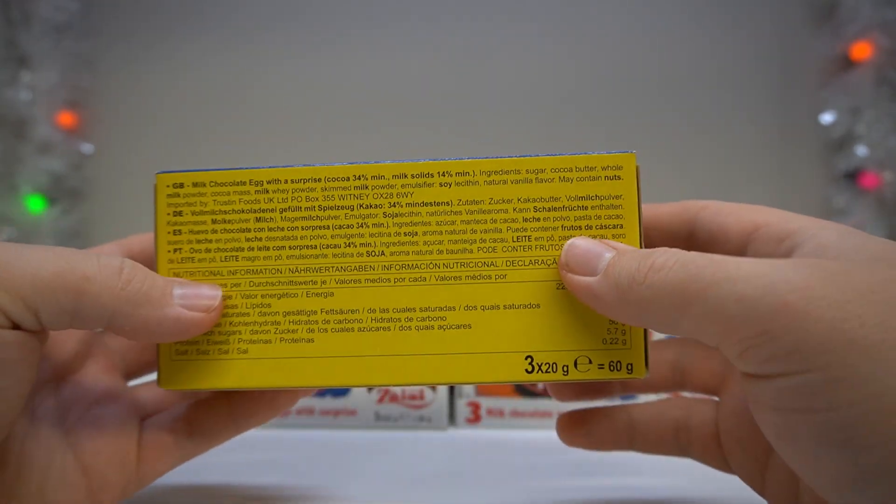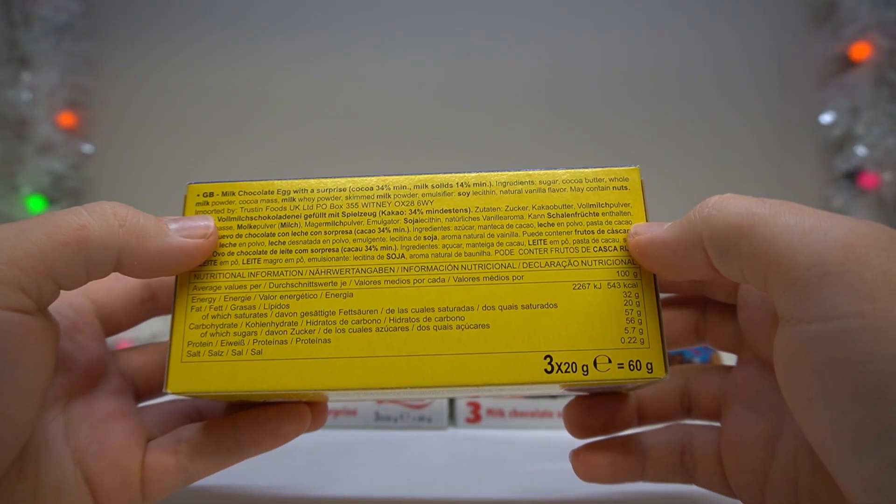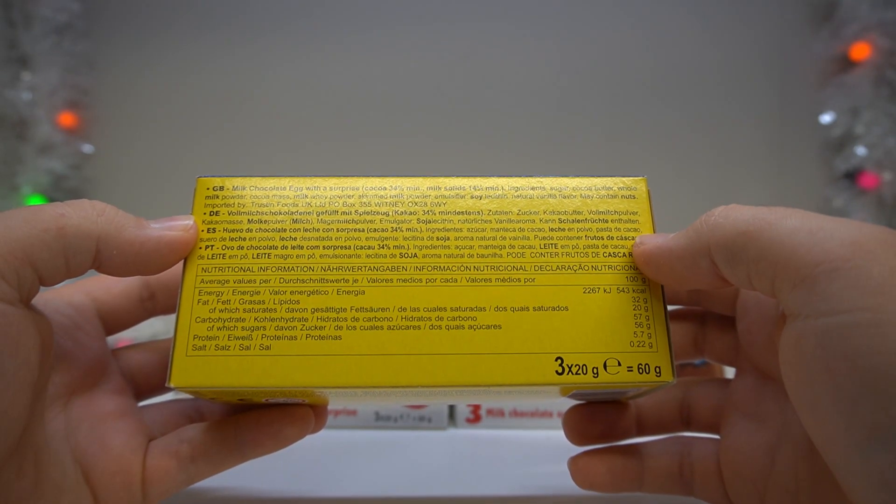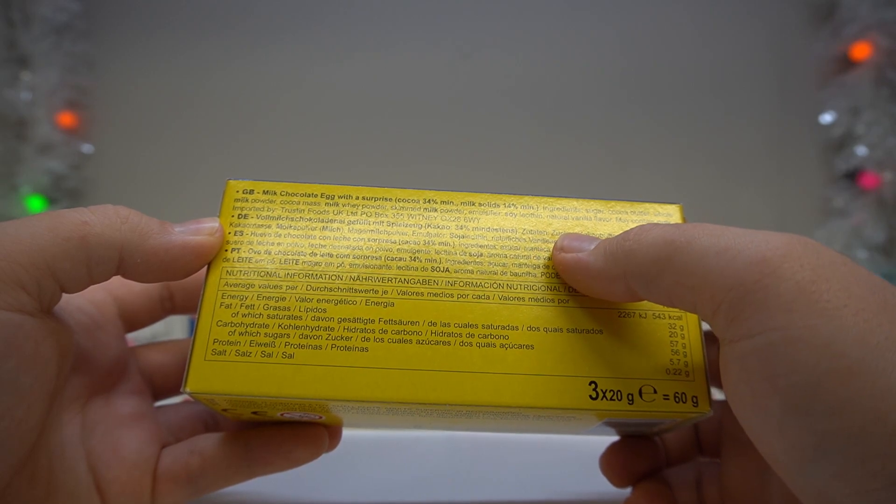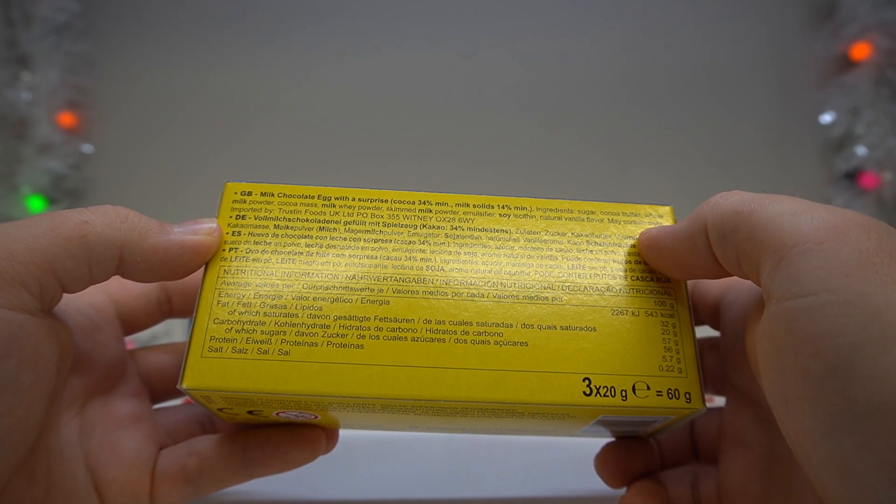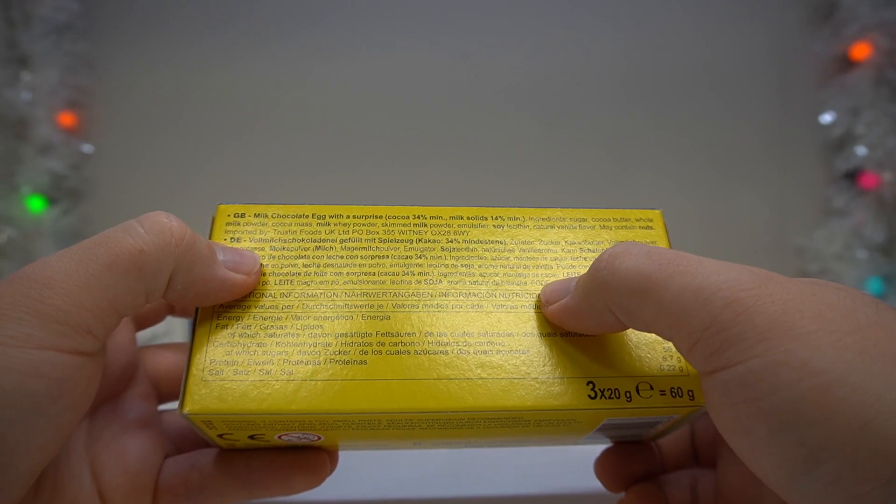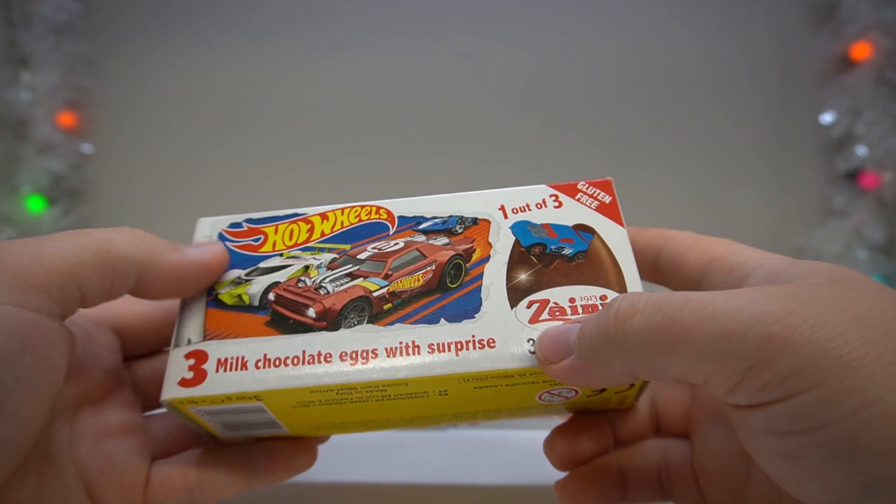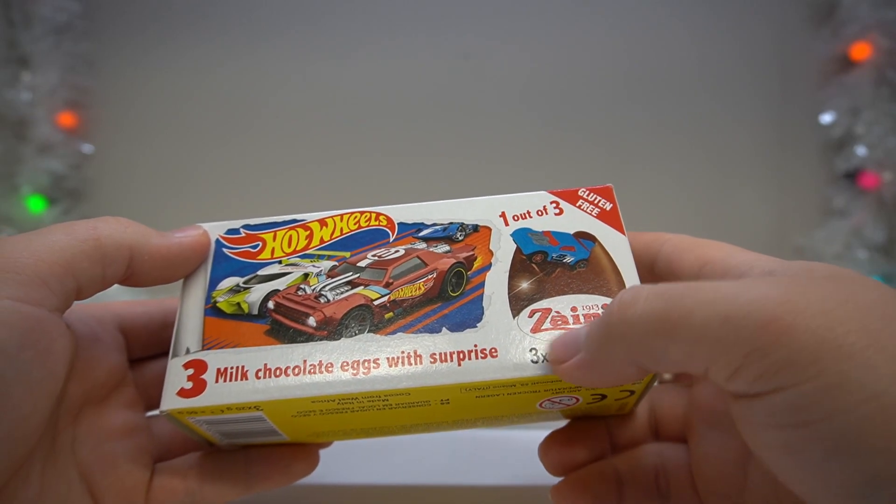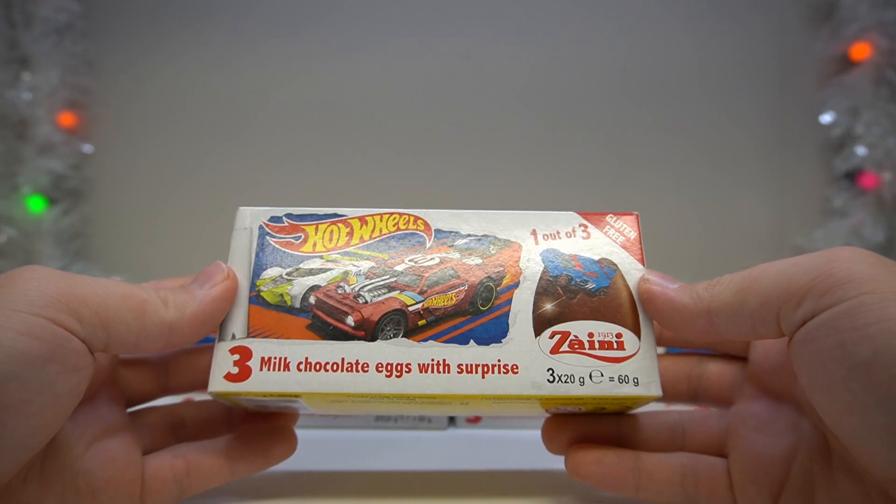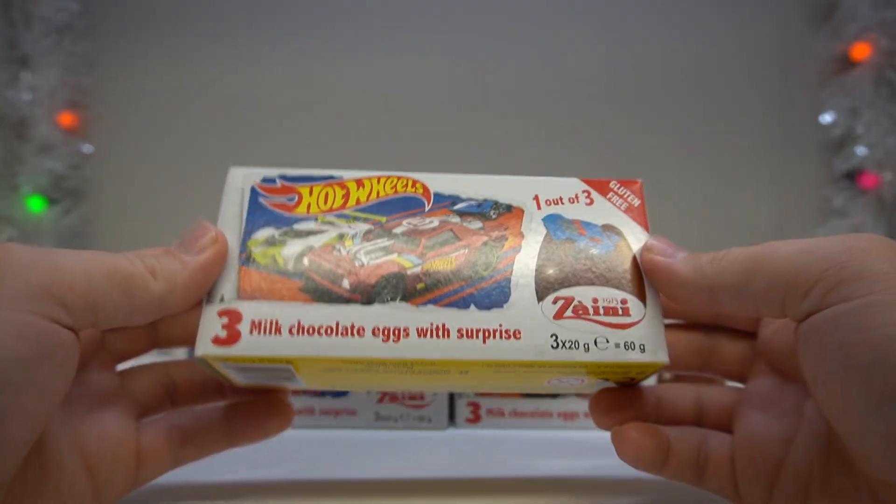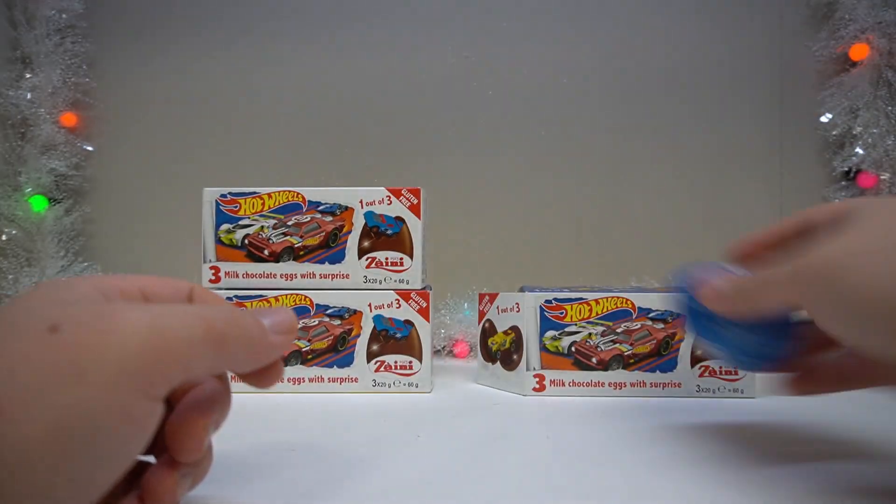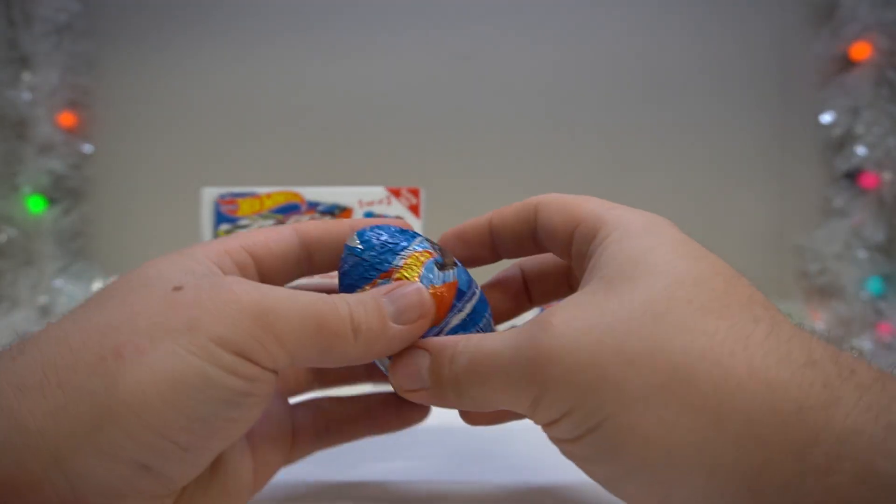Yeah, but then I suppose most chocolate does last quite a long time. Milk chocolate egg with surprise. Cocoa, 34%. Milk solids, 14%. Minimums. Ingredients, sugar. Hopefully you can see this is quite small. Sugar, cocoa butter, whole milk powder, cocoa mass, milk whey powder, skim milk powder, emulsifier, soy lecithin, natural vanilla flavour, may contain nuts. Imported by Trustin Foods UK Limited. Well, interesting. And there seems to be a brand here, Zaini? I don't know how you say that. It's got like a thingy on it. I'm really interested in what it's going to be. I'm not overly hopeful that the cars are going to be any good. I won't lie.